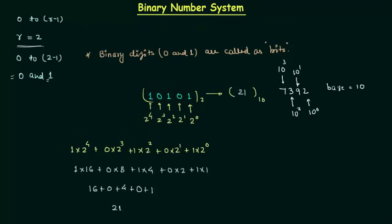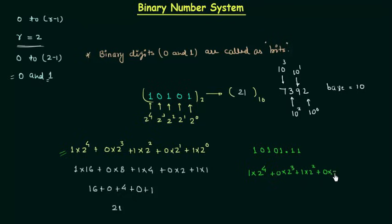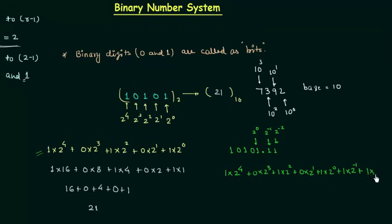But what if there is a binary point? Let's take another example. The number is 1, 0, 1, 0, 1 followed by a binary point — not a decimal point, but a binary point — and after it, 1, 1. The integer part has weights 2⁴ down to 2⁰. The digits after the binary point have weights 2⁻¹ and 2⁻², so we write: 1×2⁴ + 0×2³ + 1×2² + 0×2¹ + 1×2⁰ + 1×2⁻¹ + 1×2⁻².